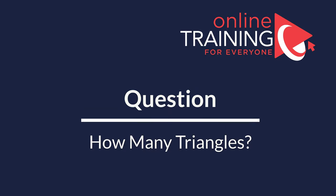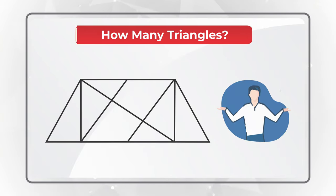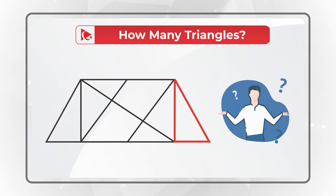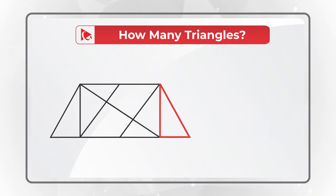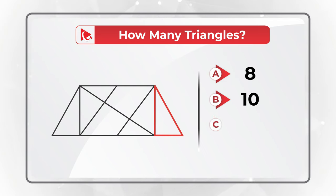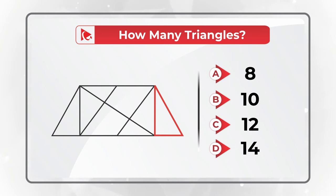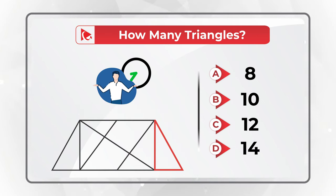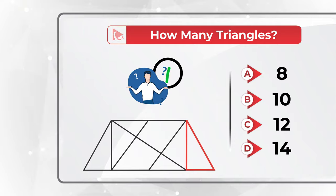When I saw this question I couldn't believe the answer. You need to determine how many triangles are represented in a given shape. You see one triangle highlighted in red, but you have four choices: A) 8 triangles, B) 10 triangles, C) 12 triangles, or D) 14 triangles. Give yourself a little bit of time to come up with the solution.